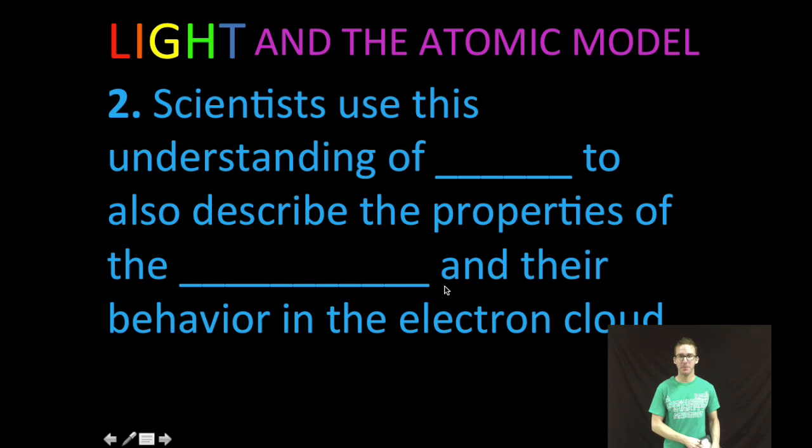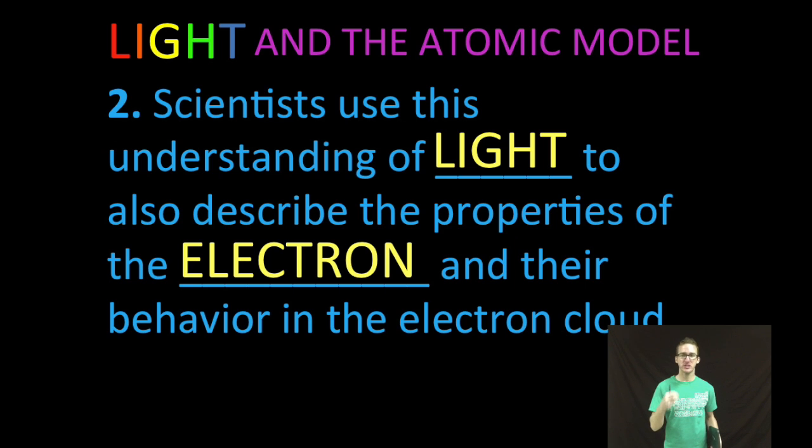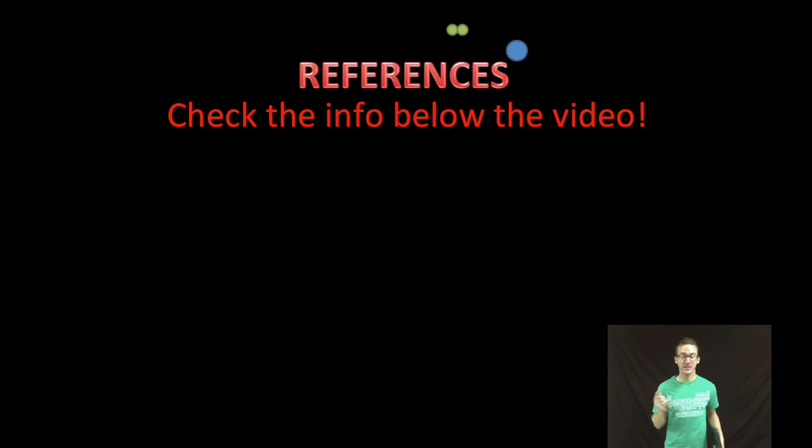And so before we end for today, important to come back to that, recognize we're taking this little timeout to talk about light. It was scientists' advancement in the understanding of light that helped us better understand and describe the properties of the electron and their behavior in the electron cloud. Again, think about the electron behaving not only as a particle, but also as a wave. All right, and that's it for today's video. Have a fantastic day.